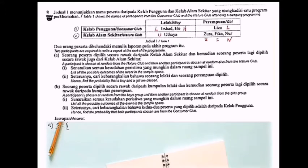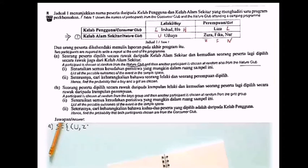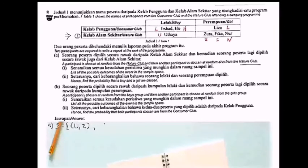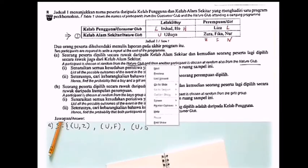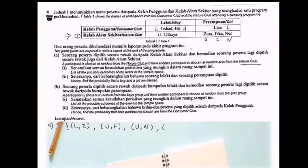First possible outcomes: Utaya and Zura, or I can choose Utaya and Fika, Utaya and No.